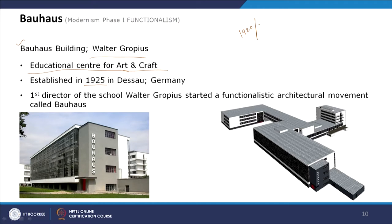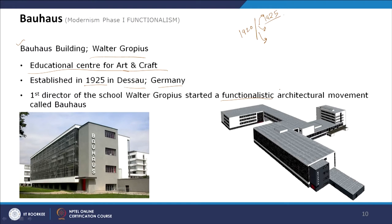Modernism's different movements started around 1920, and almost five years later in 1925 the Bauhaus Building emerged in Dessau, Germany. Walter Gropius himself was the first director of the school and started a new vocabulary — a new style of visual thought which is the Bauhaus school. This is a functionalist movement, and function comes first.